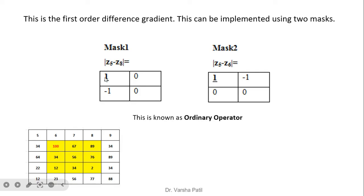The underline dash indicates the center of the mask. For example, with a 5x5 image, we skip border pixels and apply the mask at each interior location. We multiply: 100×1, 67×0, 34×(-1), 56×0, and place the result at the position corresponding to the center pixel (100) in the modified image.